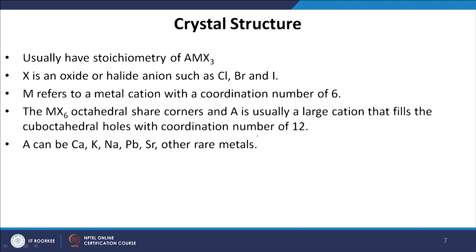Because of these advantages, perovskite picked up the research interest of many people. This material has a stoichiometry of AMX3 for single perovskite; there are also double perovskite structures. The A site can be an organic or inorganic cation. As organic cations, for example, CH3NH3, CH3NH2, or CH3CH2NH2 can be used, or an inorganic group like cesium.